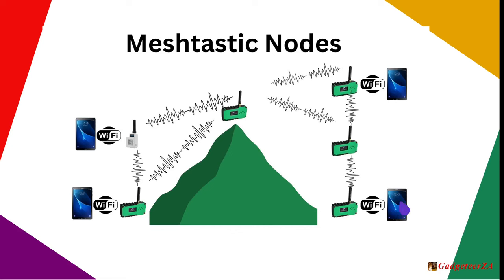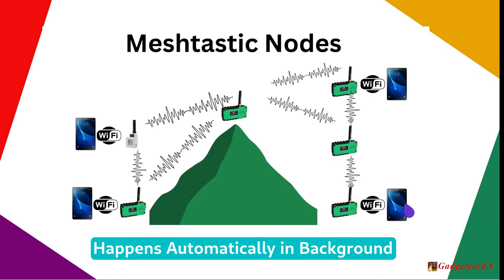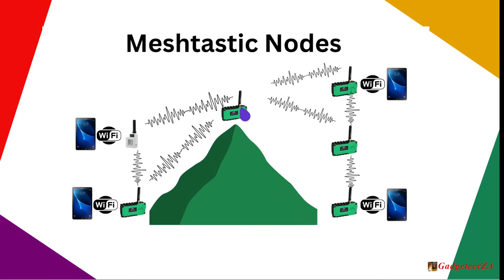You only need a phone or tablet connected when you want to read or send messages. Each node sees other nearby nodes and relays messages along. Each relay is called a hop — sending from your radio to the next is one hop, to the next is another hop, and so on. A three-hop route means a message travels from source through two intermediate nodes to reach its destination.